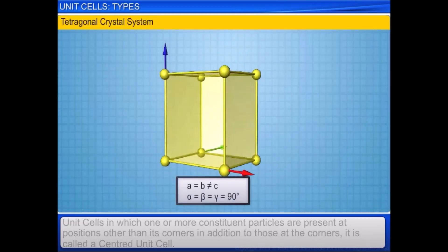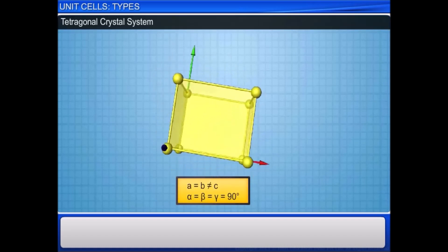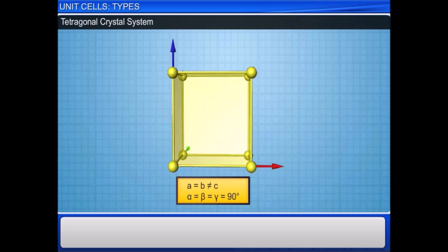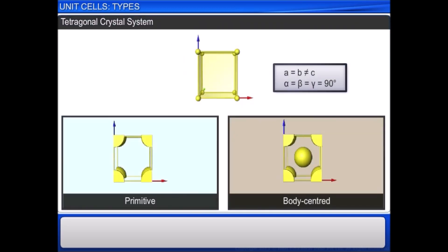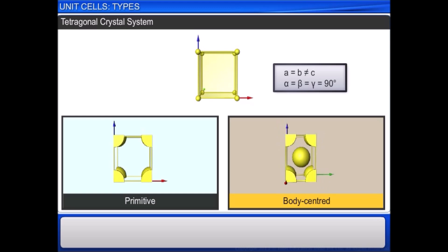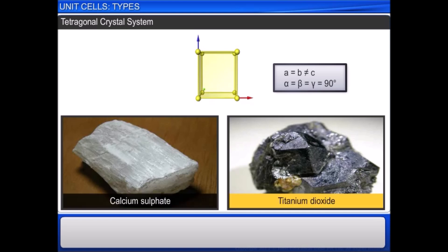In a tetragonal crystal system, the three axes are at right angles to each other, but only two are equal. The possible lattices are primitive and body centered. Calcium sulfate and titanium dioxide are examples of this type of crystal structure.